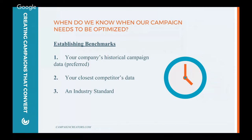The third way is an industry standard, but it's not my favorite. As we know, every company is different, every target persona is different, and every industry is different. So industry standards — if it's the best you've got, go ahead and run with it, but it's not necessarily the preferred method. And finally, the fourth one is your best guesstimate. This is kind of a last resort, but as long as you use a heuristic framework and make an educated guess as best as possible, there are no major issues with doing that.